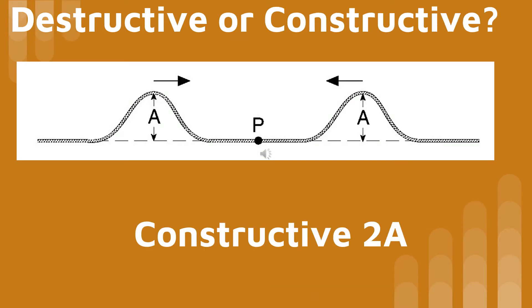A crest of amplitude A is headed towards another crest of amplitude A. When they meet at point P, they produce an amplitude of 2A. This kind of interference is called constructive interference.